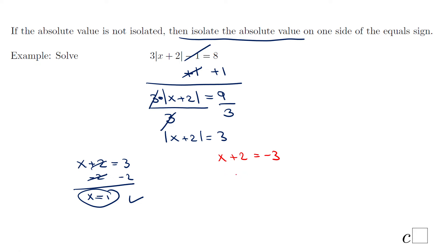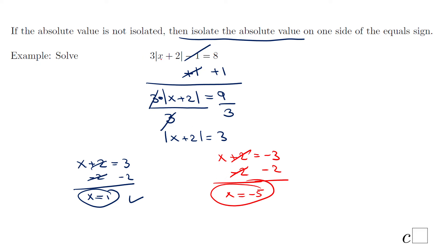Let's move to the second equation. I'm going to subtract 2 to get rid of the plus 2, and I have x equals negative 5. Let's check by plugging in: negative 5 plus 2 is negative 3, absolute value of negative 3 is 3, times 3 is 9, and 9 minus 1 is 8 — so it does work. We've checked this solution.